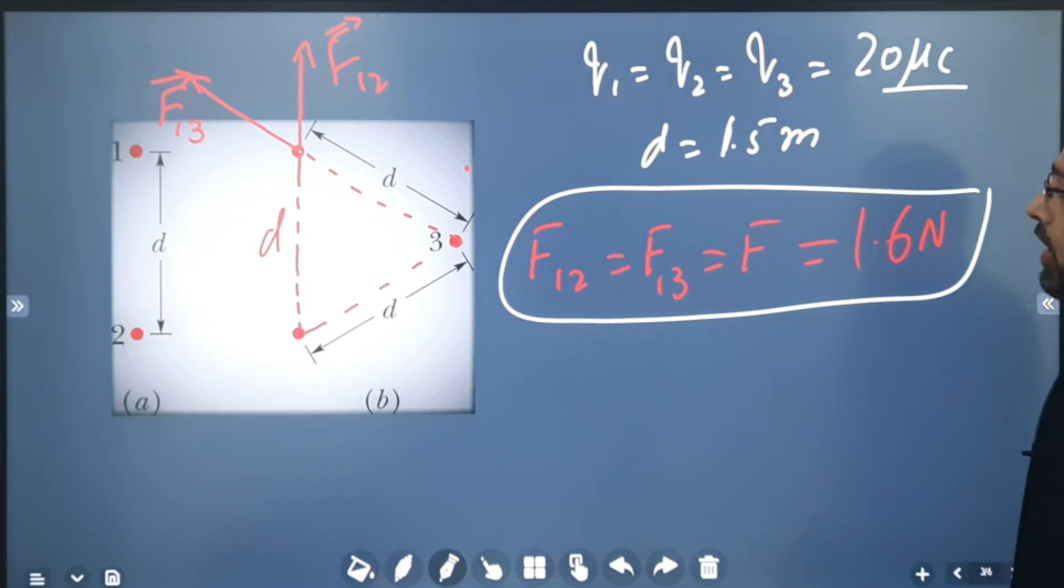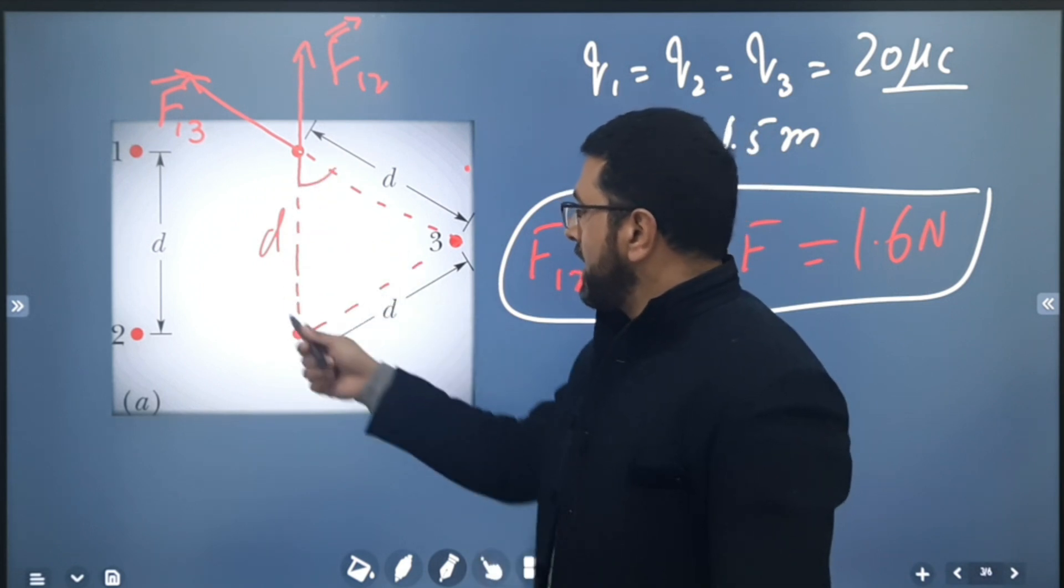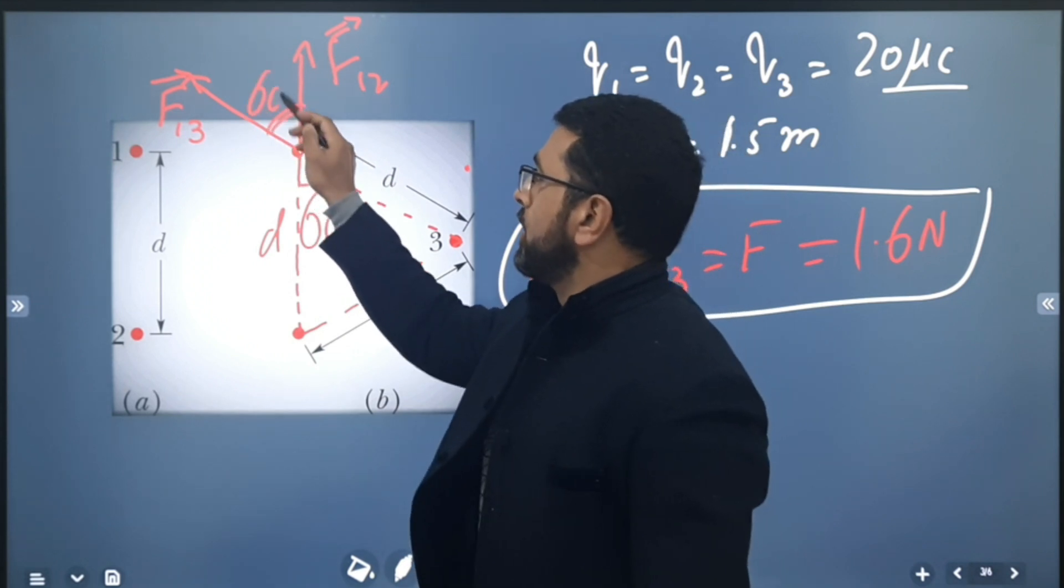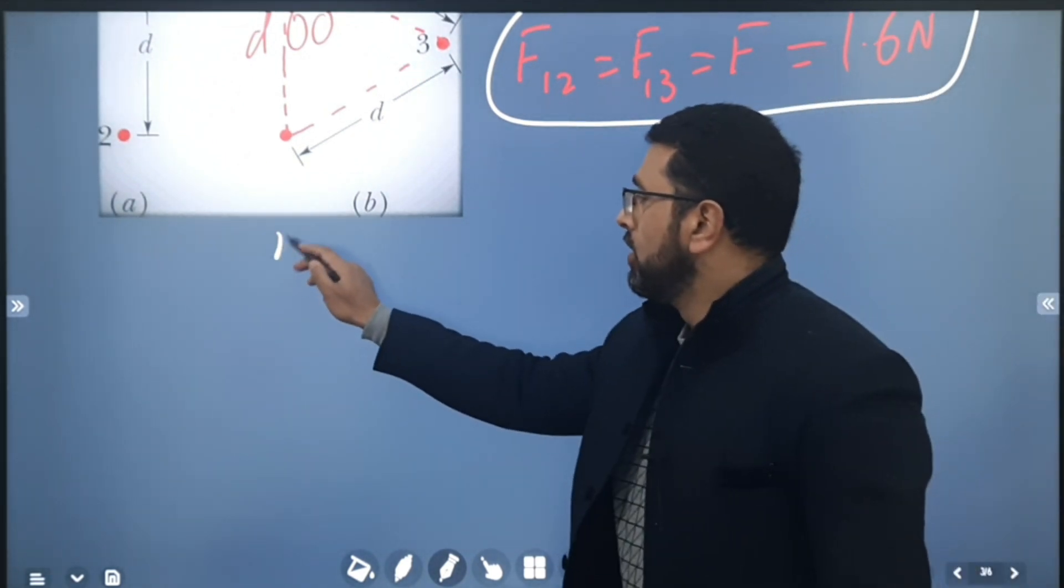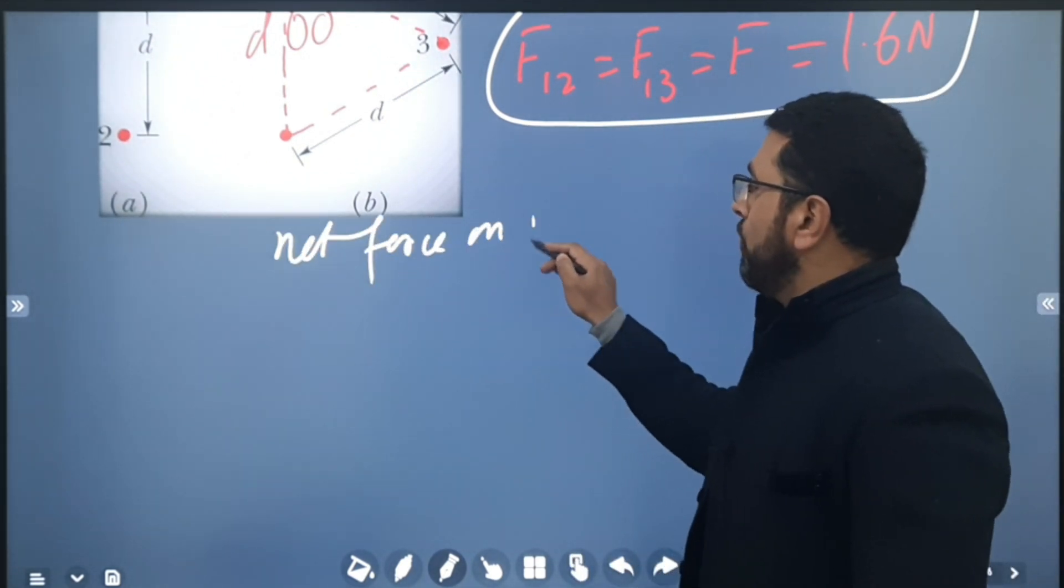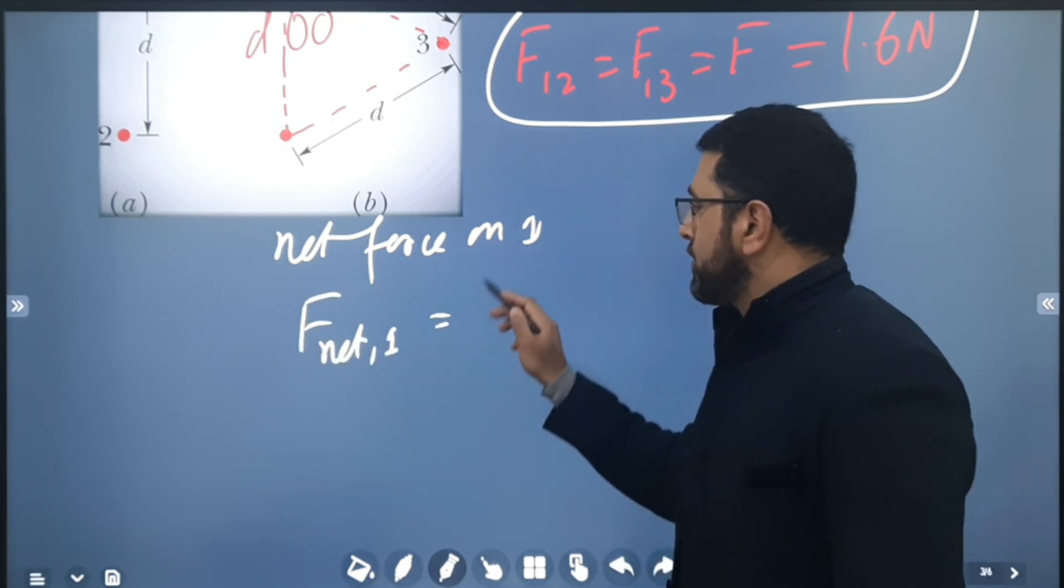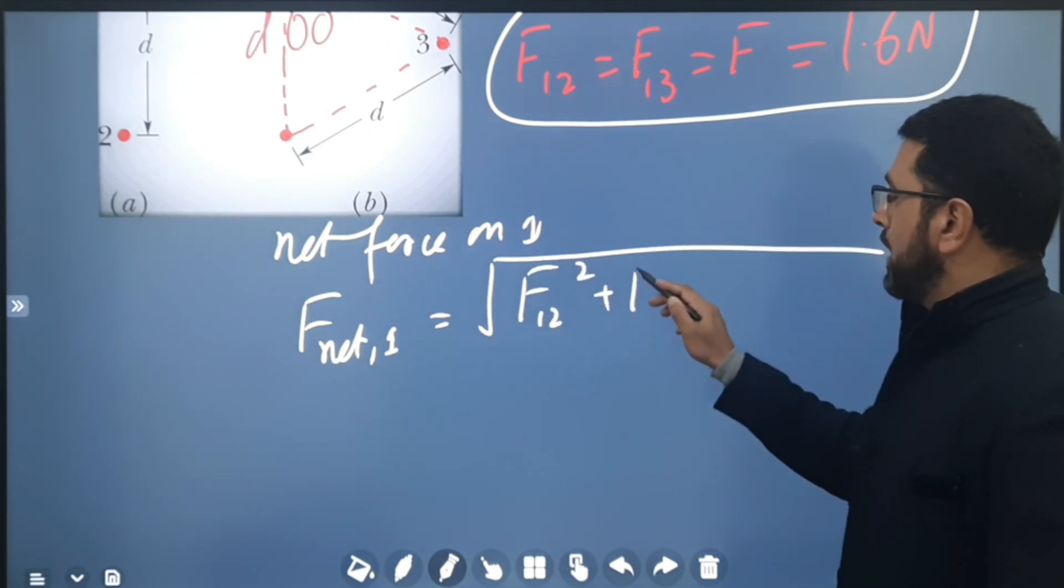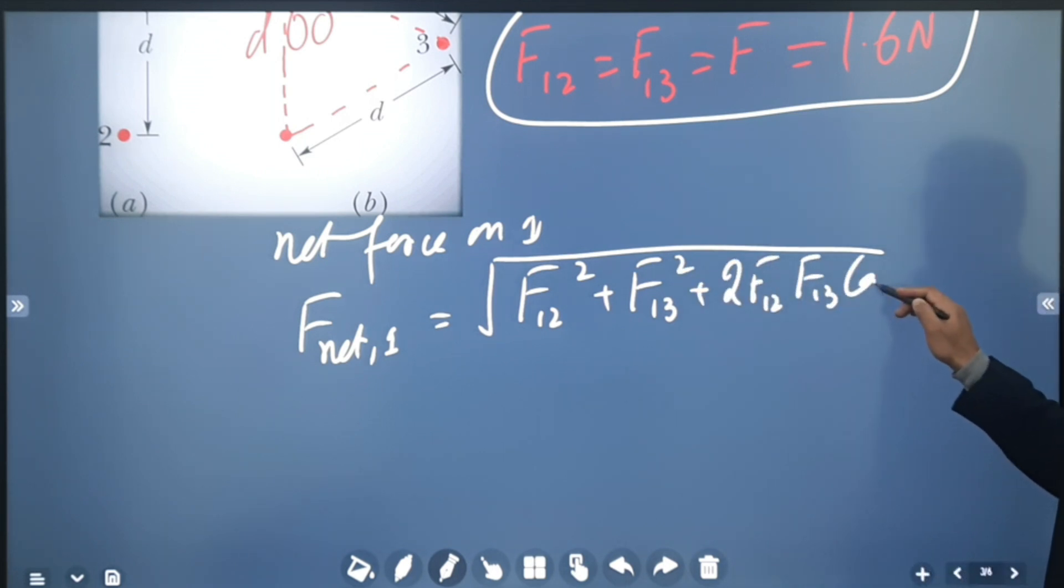Now we have to find out net force of these two forces. This is an equilateral triangle, so this angle is 60 degrees, which means this angle is also 60 degrees, vertically opposite angles. So net force on 1, F_net1, is simply √(F₁₂² + F₁₃² + 2F₁₂F₁₃ cos 60°). You just need some knowledge of vectors here.